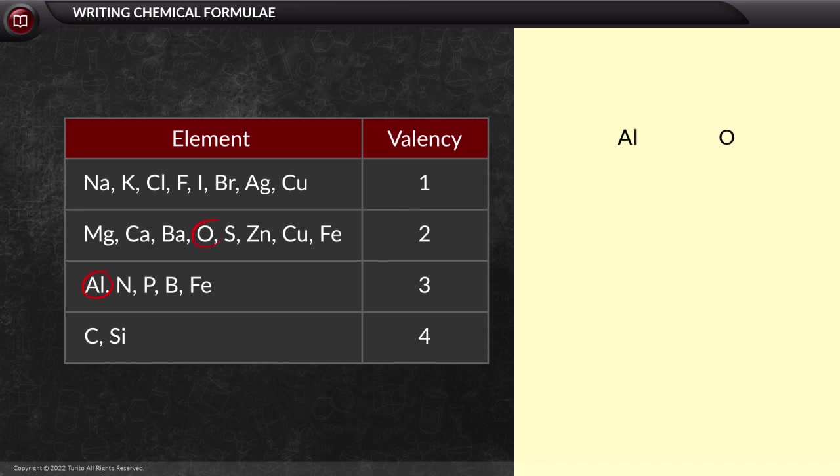If aluminium and oxygen are forming a compound, then to write the formula, we must first see their respective valency, which is 3 and 2. On applying the crisscross method, we get the formula of aluminium oxide Al2O3.